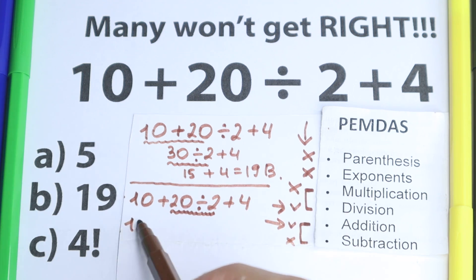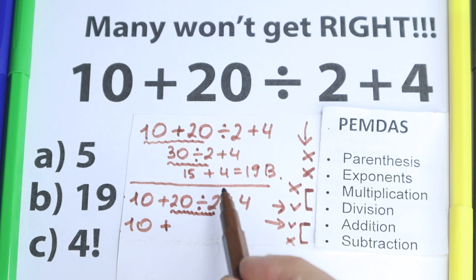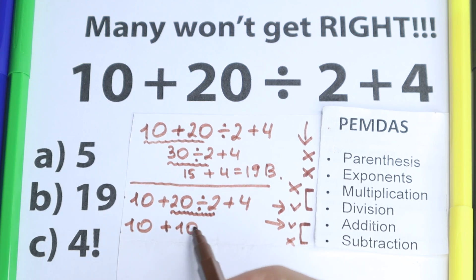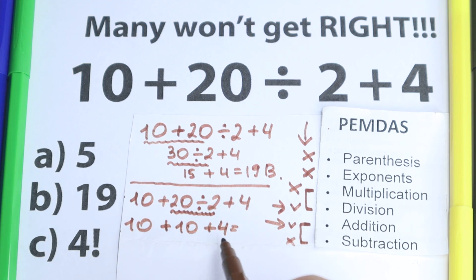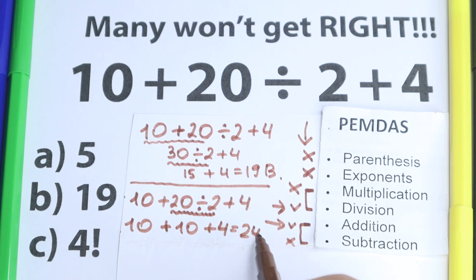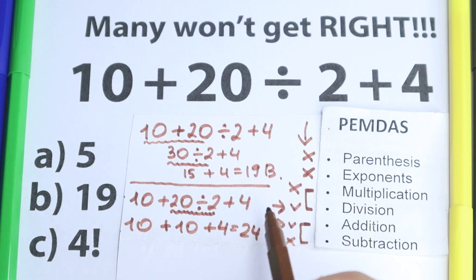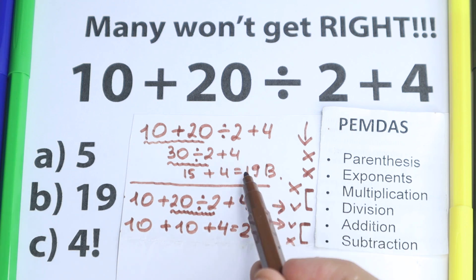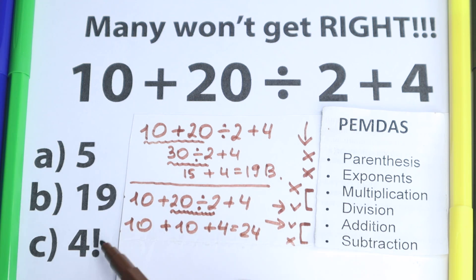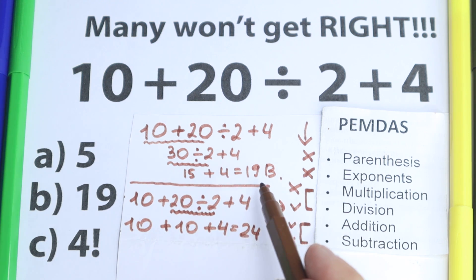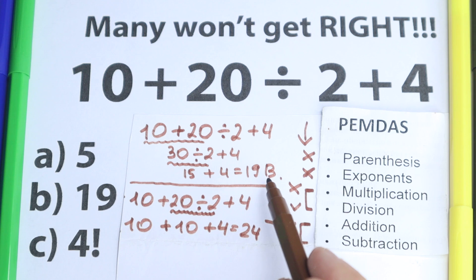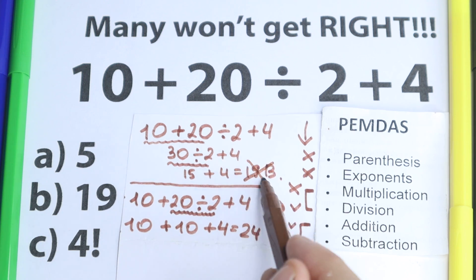So: 10 plus 20 divided by 2 plus 4 equals 10 plus 10 plus 4, which equals 24. This is the correct solution. But many students make a common mistake — they solve it correctly in their heads but then go back to the wrong answer of 19, because they don't see 24 listed and revert to it, which is absolutely incorrect.